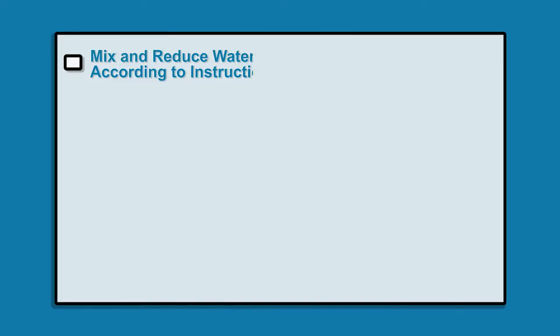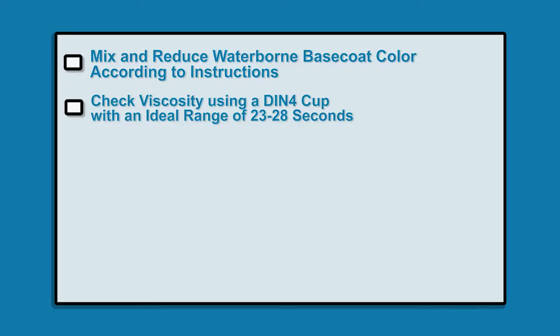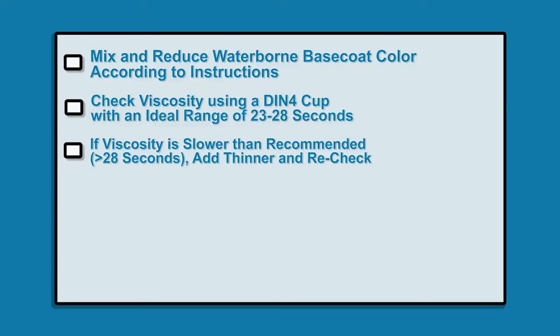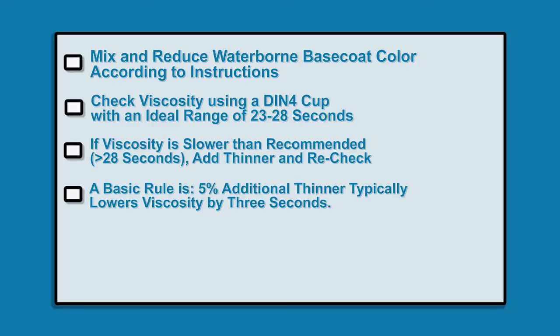Mix and reduce the waterborne basecoat according to the instructions. Check the viscosity using a DIN 4 cup with an ideal range of 23 to 28 seconds. If the viscosity is slower than recommended, more than 28 seconds, add thinner and recheck the viscosity. A basic rule is 5% additional thinner typically lowers the viscosity by 3 seconds.